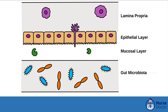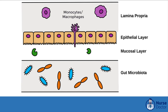The intestinal barrier consists of multiple layers: the gut microbiota, a mucosal layer that contains digestive and antibacterial enzymes, an epithelial layer that acts as a physical barrier and contains enteroendocrine cells and immune cells, and the lamina propria, which also contains immune cells.